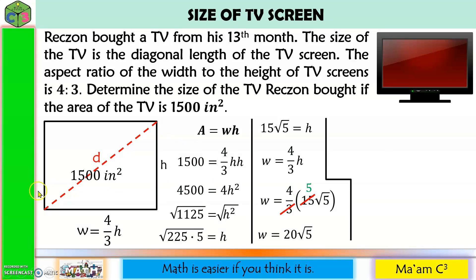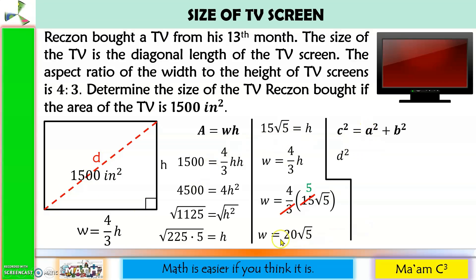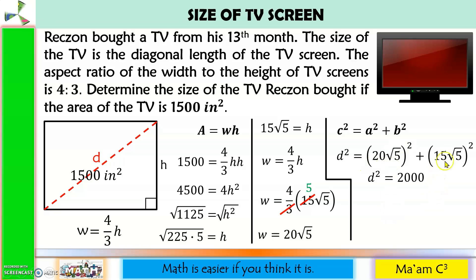Since this is a rectangle, this is a right angle, so we can use the Pythagorean theorem again: C squared equals A squared plus B squared. Our C is the longest distance, which is D. For A, I'll choose 20 square root of 5, and for B, I'll choose 15 square root of 5. 20 squared is 400; the square root of 5 squared is 5; so 400 times 5 is 2,000. 15 squared is 225; the square root of 5 squared is 5; so 225 times 5 is 1,125.